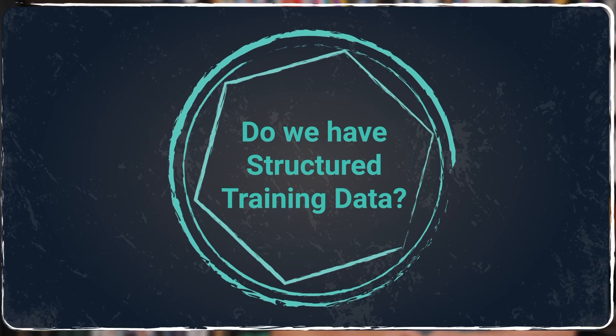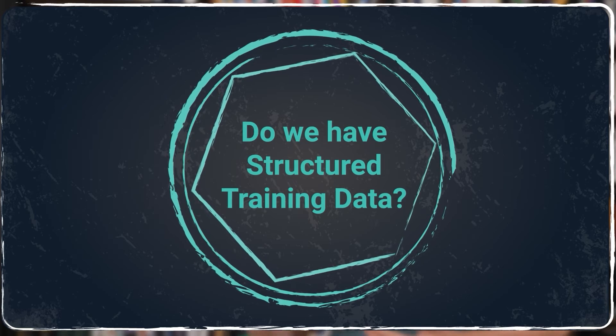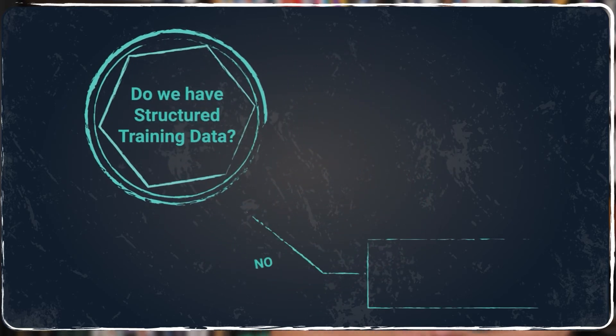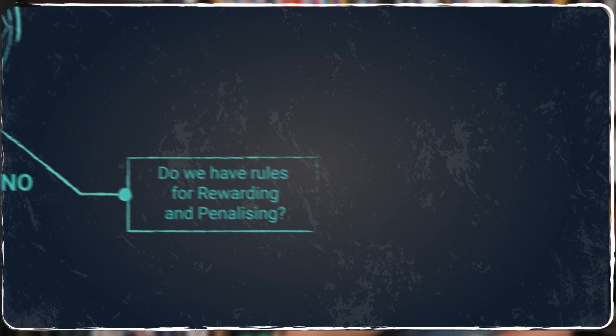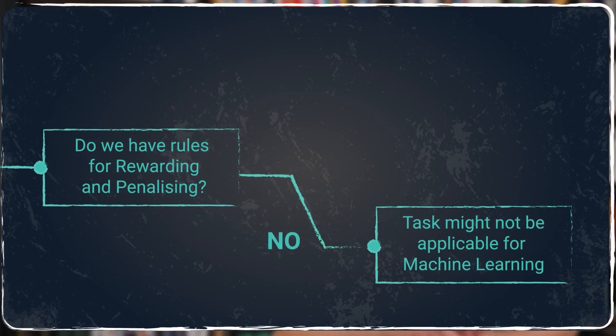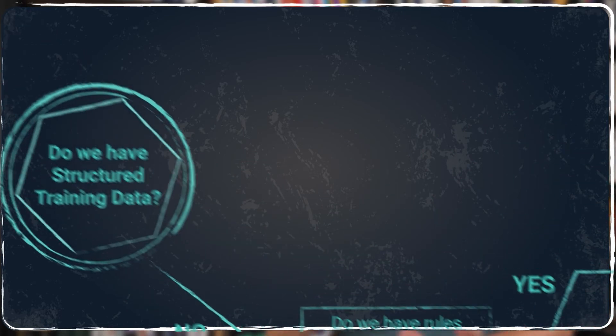The first question we need to ask ourselves is, do we have structured training data? If not, the next question is, do we have rules for rewarding and penalizing? If our answer is, again, no, our task might not be applicable for machine learning at all. But if those rules do exist, then reinforcement learning may be applied. Let's go back to the question about the structured data. Now, if our answer is yes, then it takes us to another question.